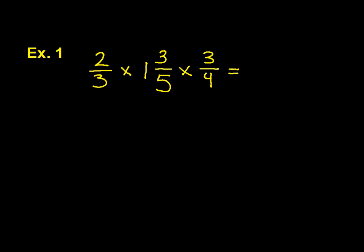The first thing we need to do is change our mixed numbers into improper fractions. After that, we can start looking for some cross-cancelling.